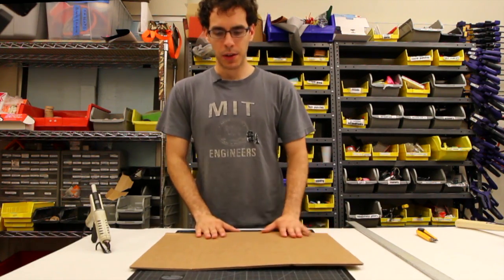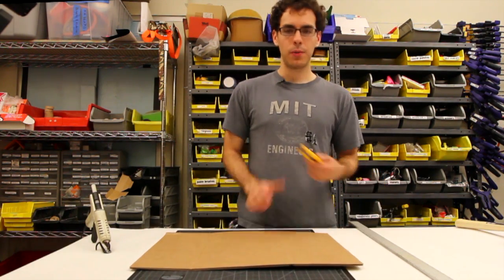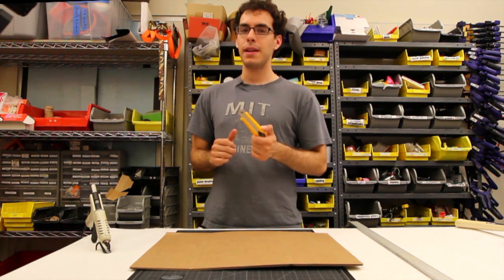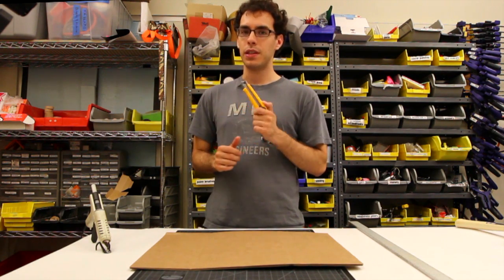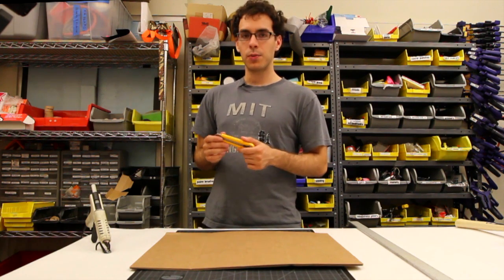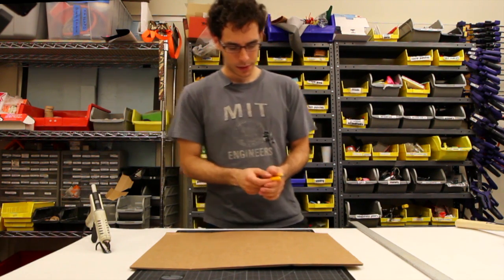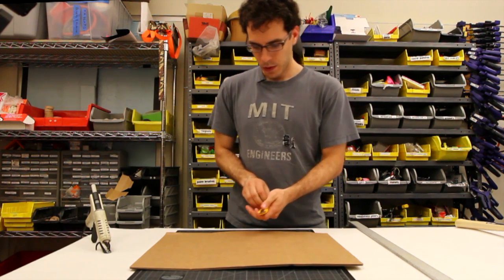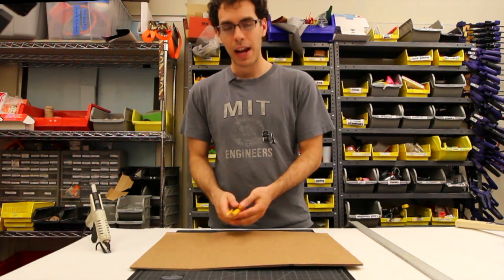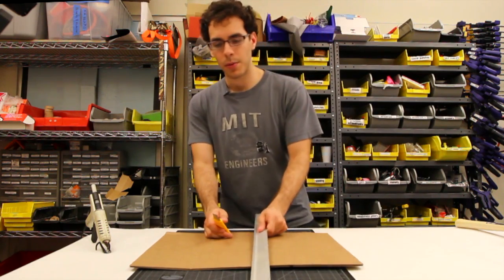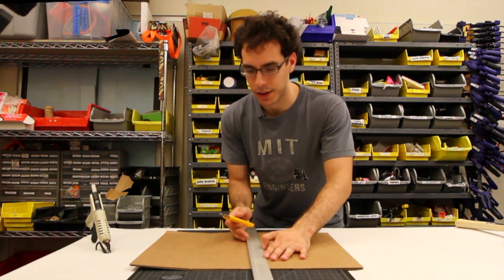Now the next thing that we're going to go over is cutting cardboard with a utility knife. Now you have to be careful. These knives are incredibly sharp and that makes them one of the most dangerous tools in the shop. If you're not comfortable using one, then ask someone to give you a hand. One tip is to keep the blade retracted until you're going to use it. That way nobody accidentally picks it up with the blade out and gets hurt.